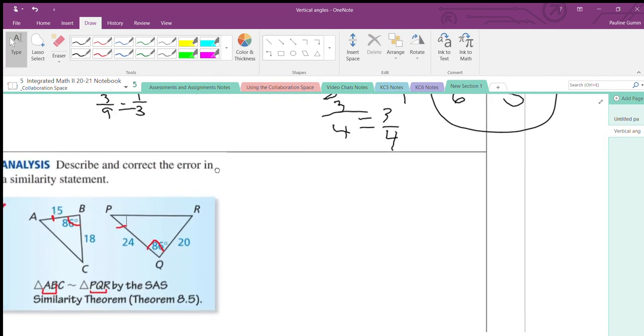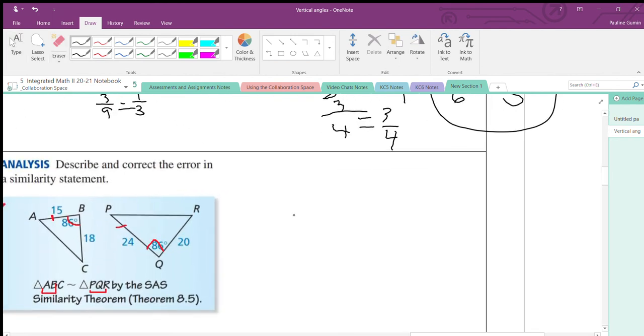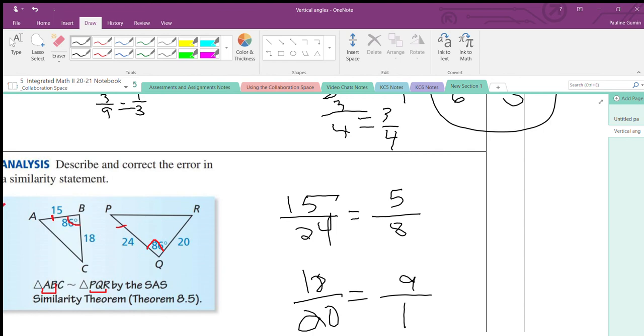That means 15 over 24. Can I reduce that? Yes, by three. That's 5 eighths. So, then the other two sides. That's 18 over 20. I can reduce this one by two. Nine tenths.